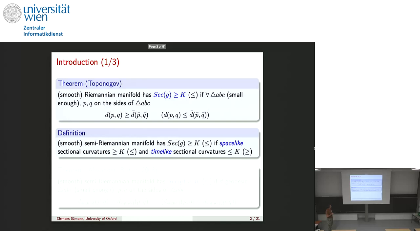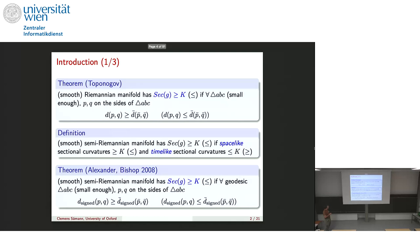You can also define sectional curvature bounds in the semi-Riemannian setting. For a long time it was thought this doesn't make sense because if you write sectional curvature in the usual way and impose a one-sided bound, it actually has to be constant. But you just have to be careful and separate the timelike k's from the spacelike k's. A smooth semi-Riemannian manifold is sectional curvature bounded below by k if spacelike sectional curvature is bounded below by k and timelike sectional curvature is bounded above by k. This goes back to Anderson, Howard, Alexander, and Bishop, who showed you can characterize these bounds by triangle comparison.